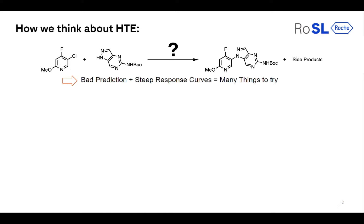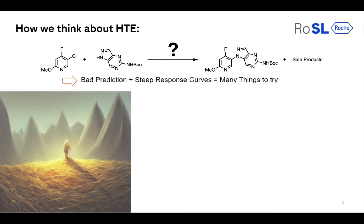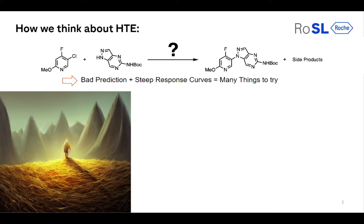That's where HTE comes in. You start to plan your reactions not as one or two per day, but actually hundreds of reactions per day — and you do that by buying robots and letting a lot of it be done by robots. Imagine you have this haystack and you're trying to find the needle — the right combination of parameters to make the reaction work.